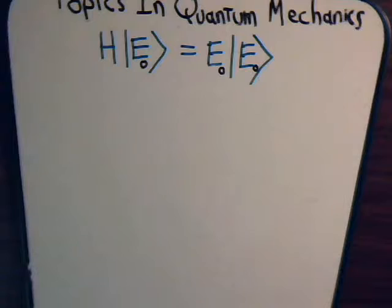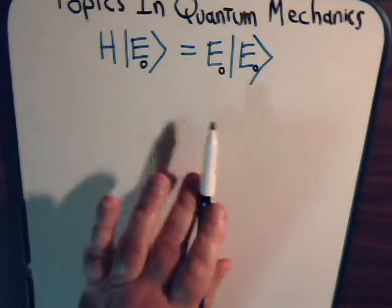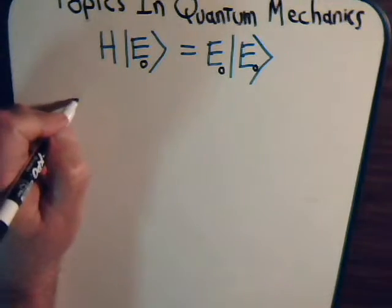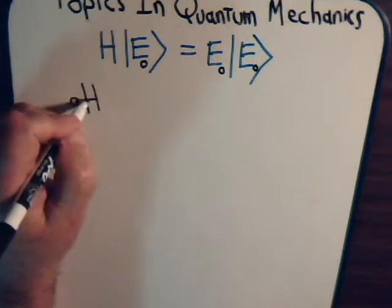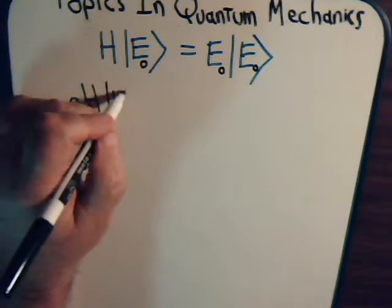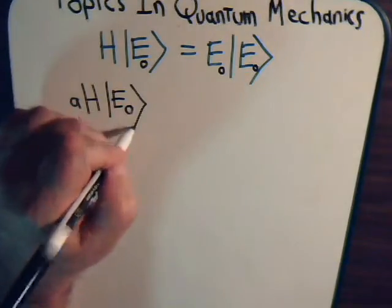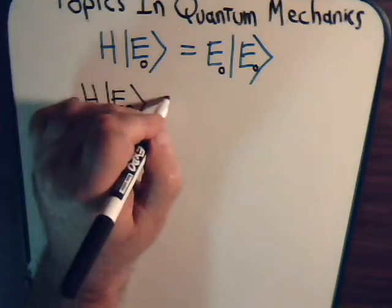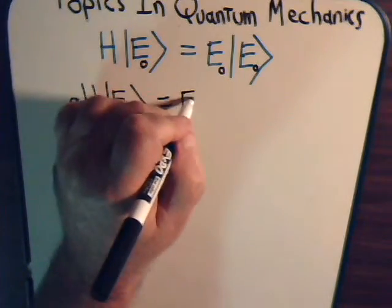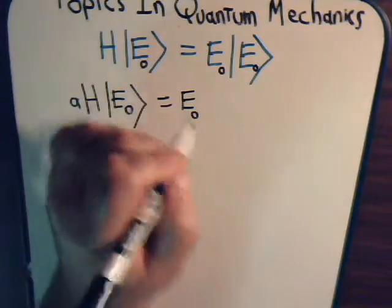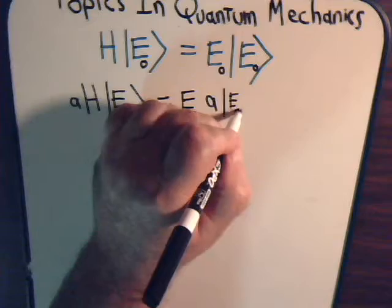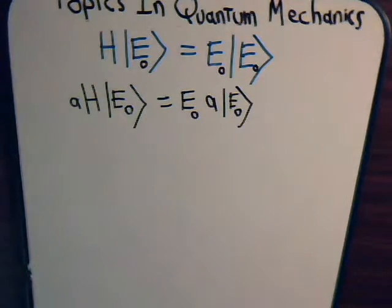Now let's do something very simple. Let's multiply both sides of this equation by the operator A. So we'll have A times the Hamiltonian times the eigenstate equals... So we have this expression.